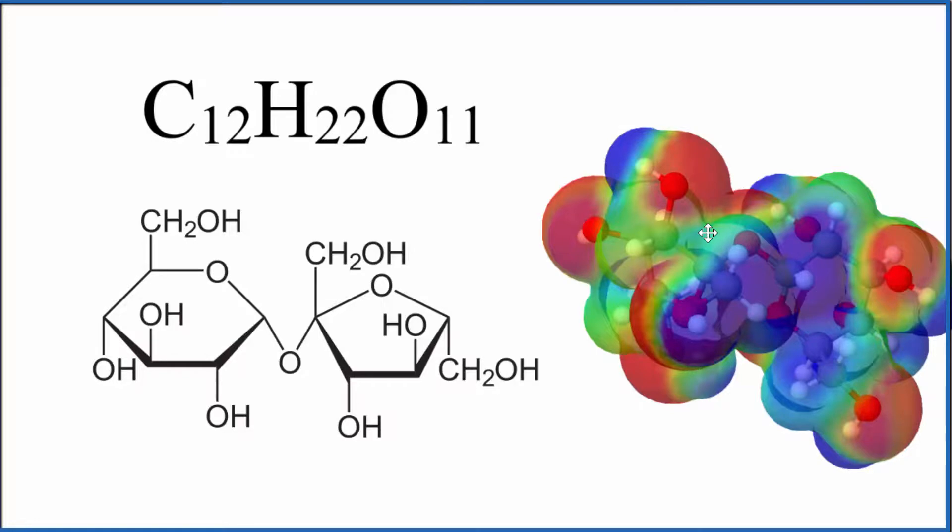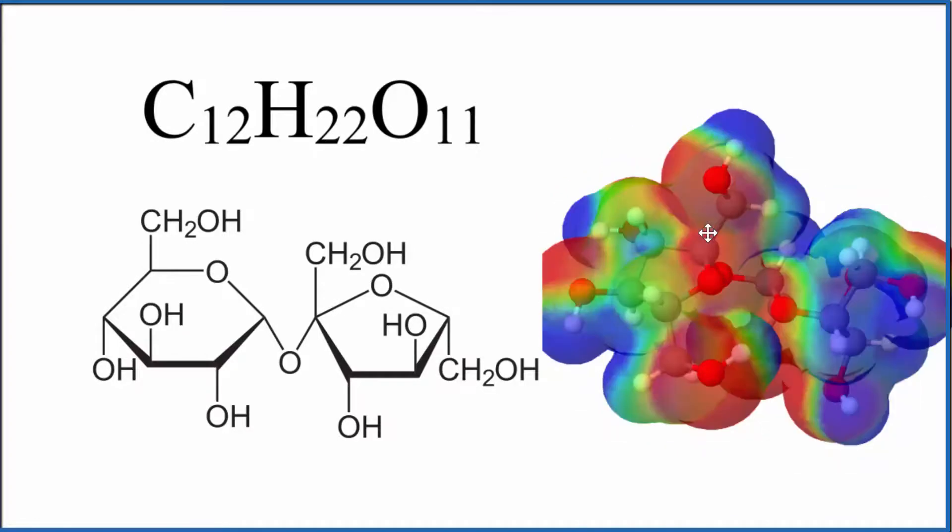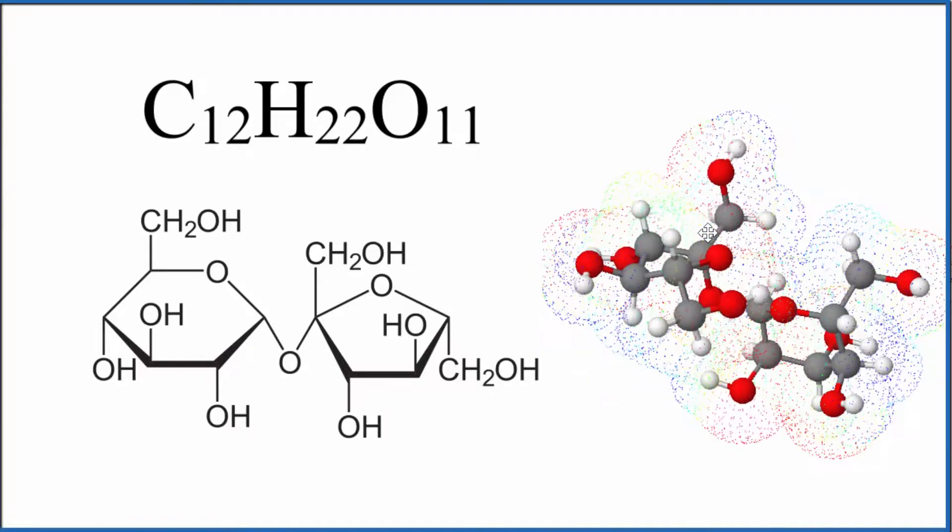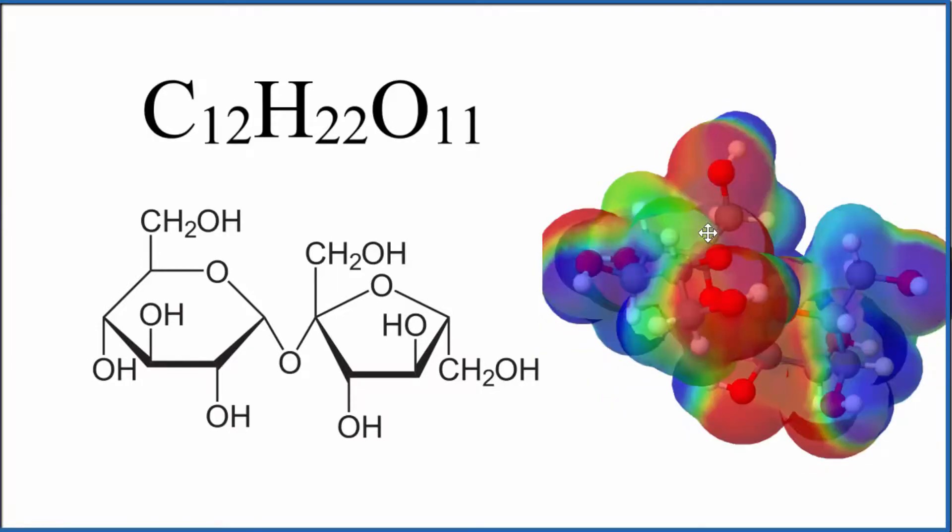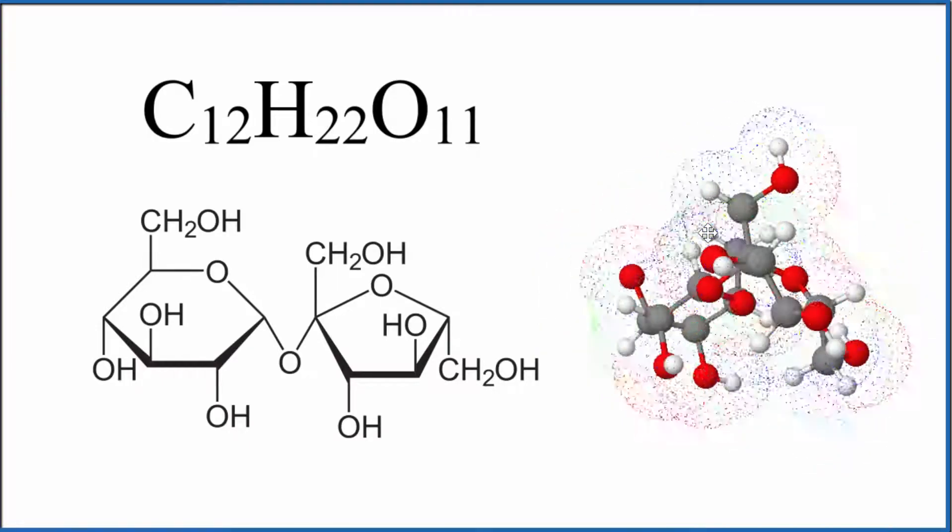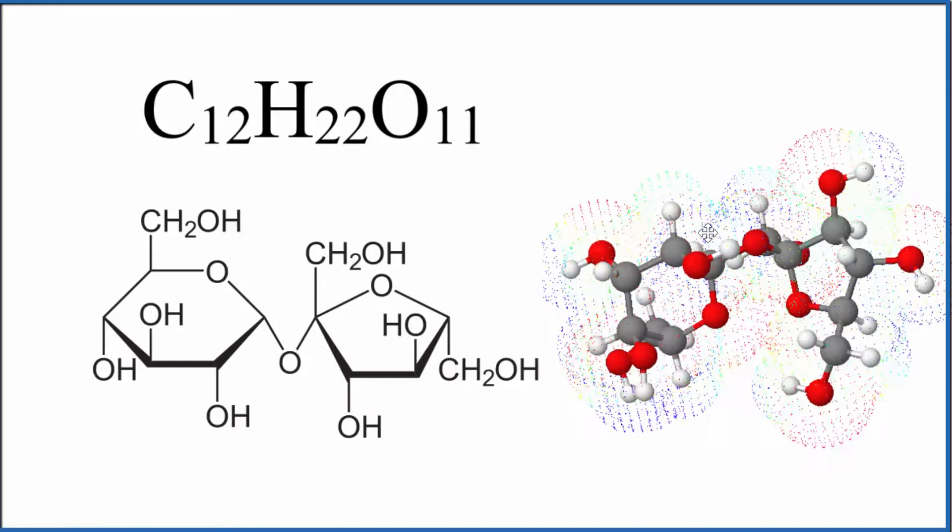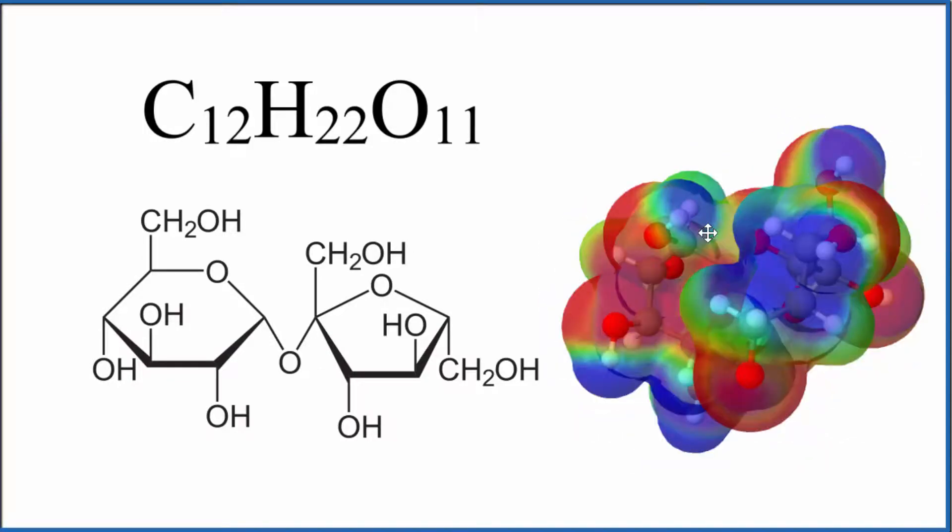And because we have these negatives and these positives here in terms of the electrostatic surface of the molecule, we can see that sucrose is a polar molecule in other polar solvents like water. That's why sugar dissolves in water because we have this polarity here.